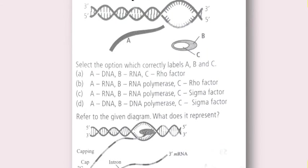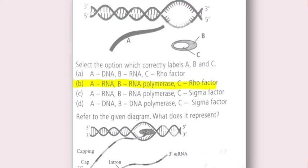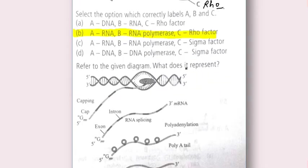The options are: A) DNA, B) RNA, C) rho factor; A) RNA, B) RNA polymerase, C) rho factor; A) RNA, B) RNA polymerase, C) sigma factor; and A) DNA, B) DNA polymerase, C) sigma factor. The answer is B, because C is the rho factor, which is responsible for termination in prokaryotes.